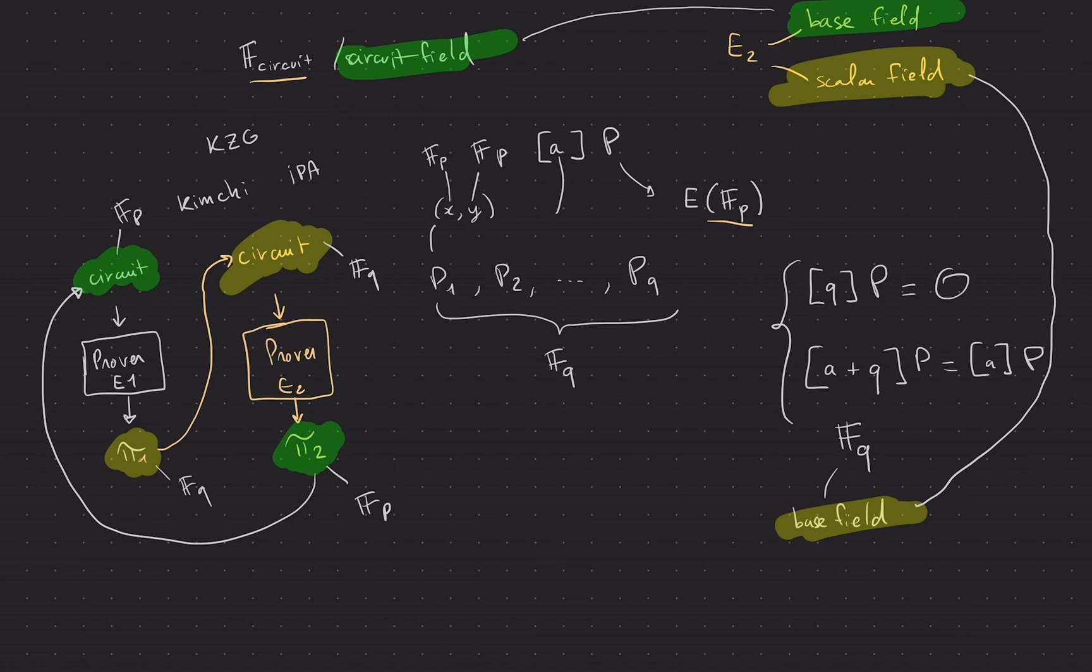And so the Zcash team has invented a pair of elliptic curves called the Pasta curves. And one is called Pallas. And the other one is called Vesta. They are two curves with prime orders. So you can't really use KZG because KZG is for pairing. But you can use something like IPA that works with prime order curves. That doesn't use pairings as your polynomial commitment scheme.